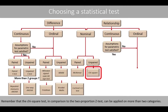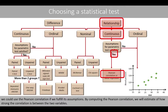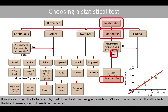Remember that the chi-square test, in comparison to the two-proportion z-test, can be applied to more than two categories. If we'd like to analyze if there is a relationship between two continuous variables — for example, between blood pressure and body mass index — we could use the Pearson correlation if we fulfill its assumptions. By computing the Pearson correlation, we estimate how strong the correlation is between the two variables. If we'd like to predict blood pressure given a certain body mass index, or estimate how much body mass index affects blood pressure, we could use linear regression.